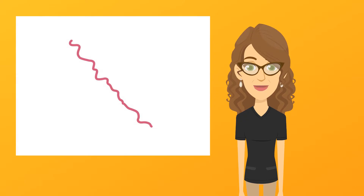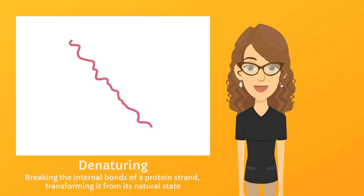When the internal bonds of a protein are broken, the strand relaxes and uncoils. This change from its natural state to a different form is called denaturing.